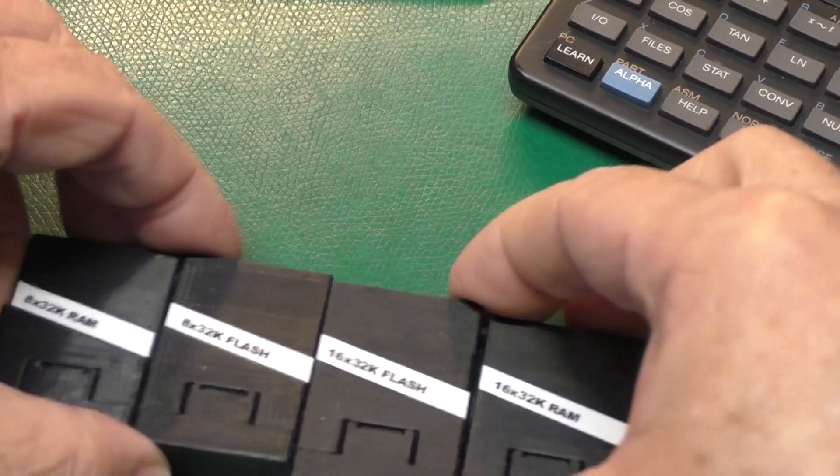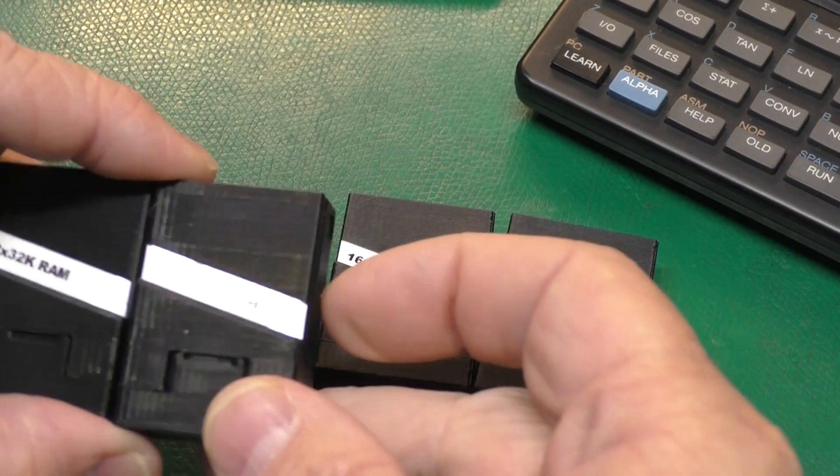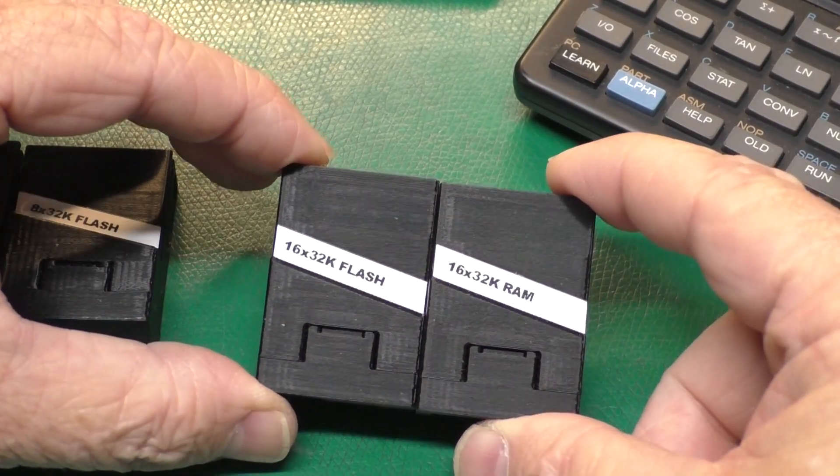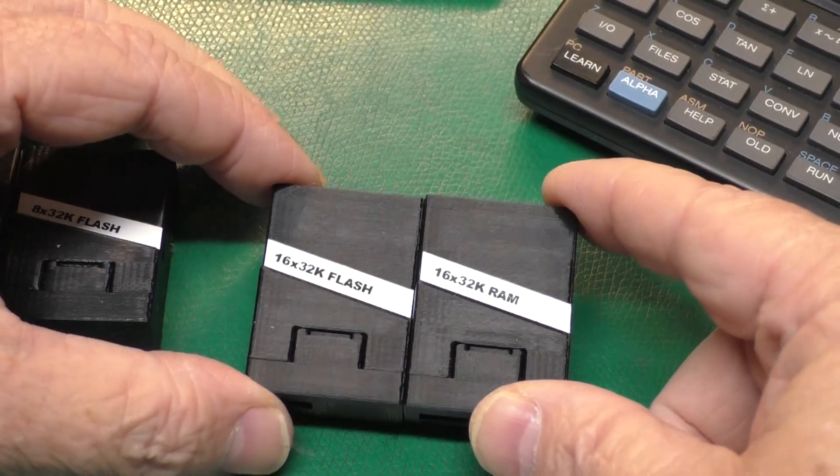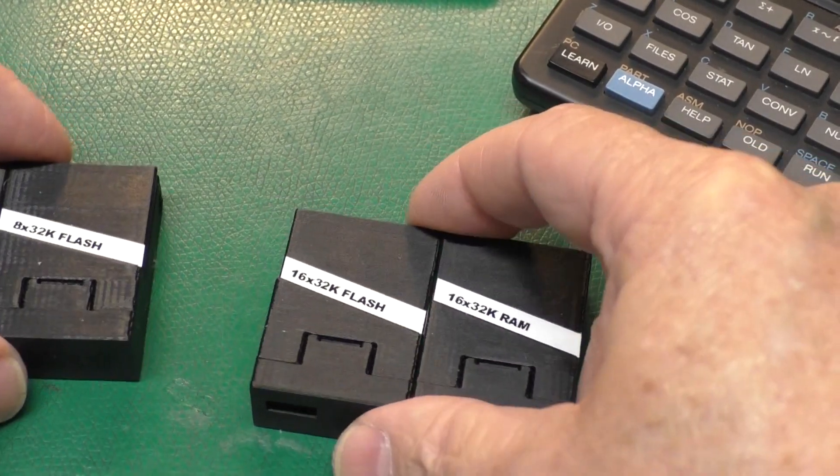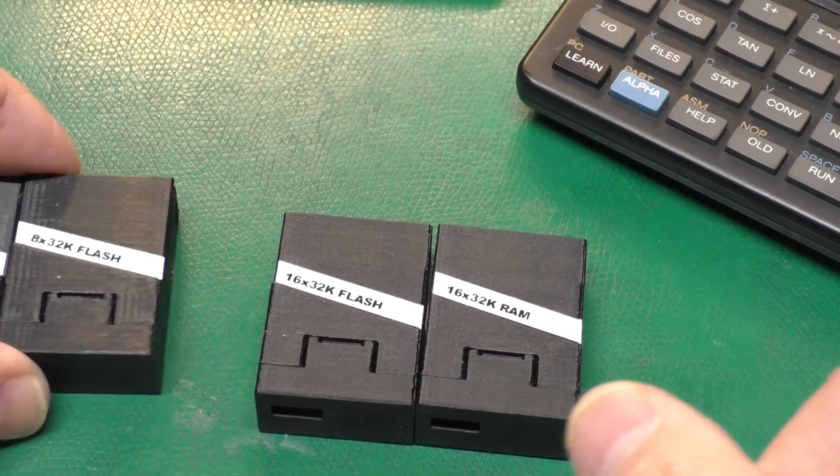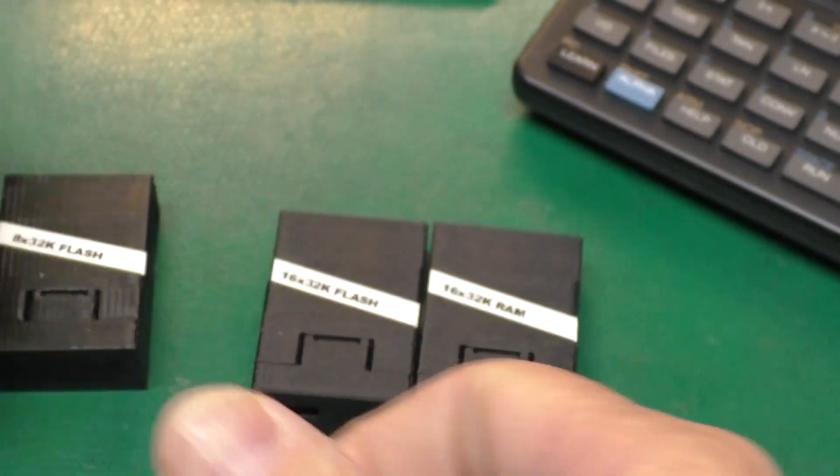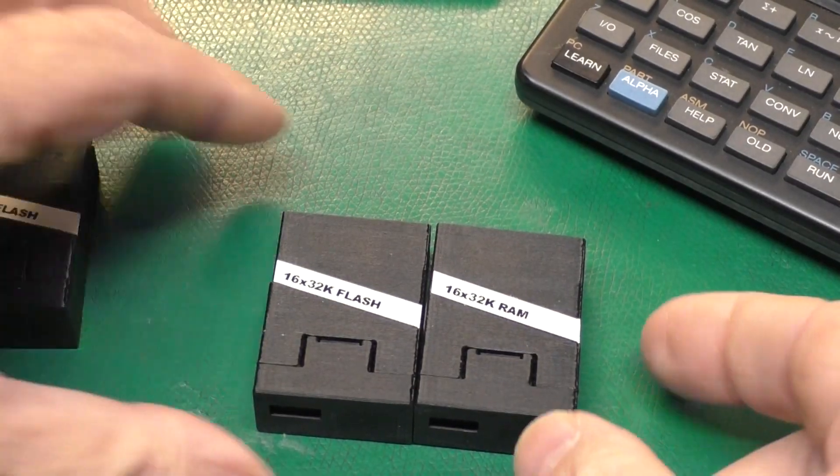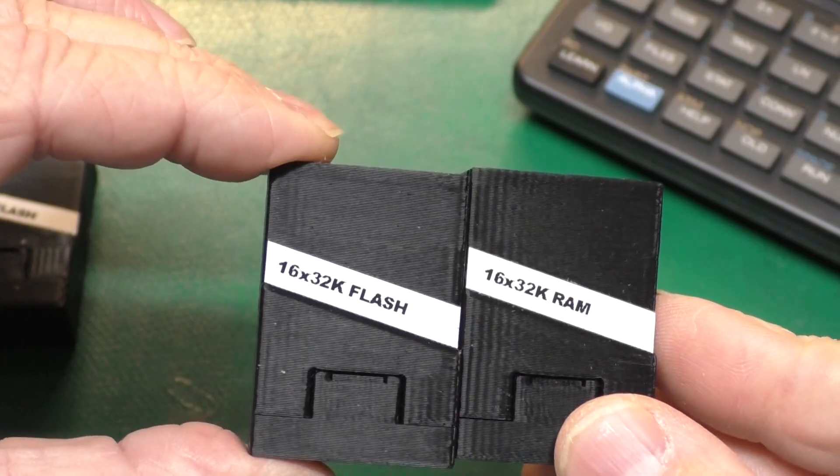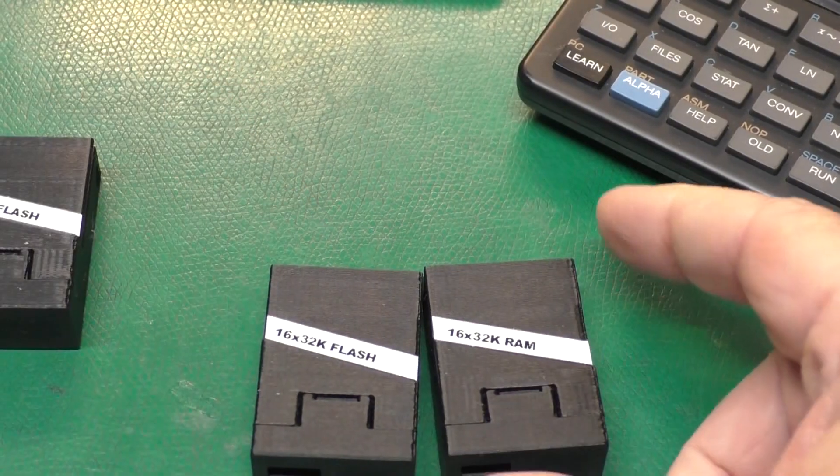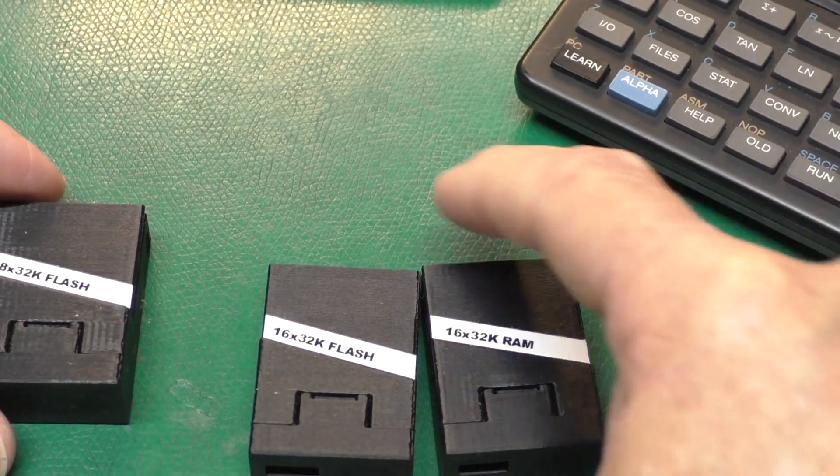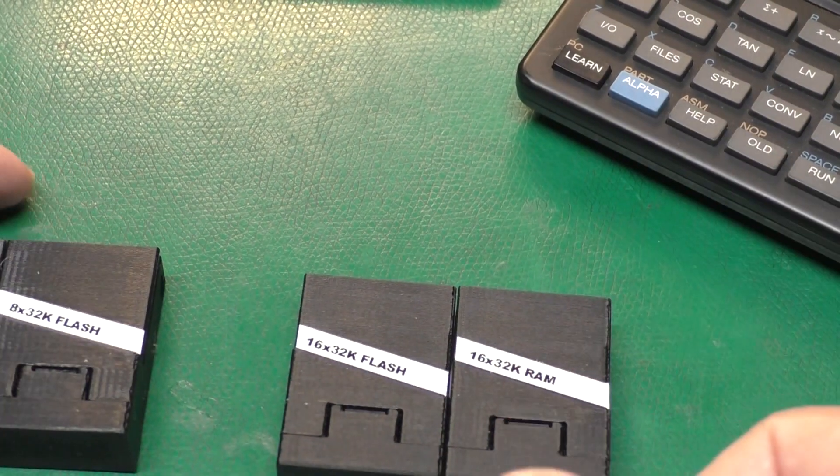But what we're here to talk about is these guys. This is a RAM and flash cartridge that a friend and I came up with, mostly him. I did the case and helped out with this and that and collecting all the ROMs to burn through the flash carts. The original ones were eight banks of 32k, either RAM or flash. The new ones available are 16 banks of 32k.